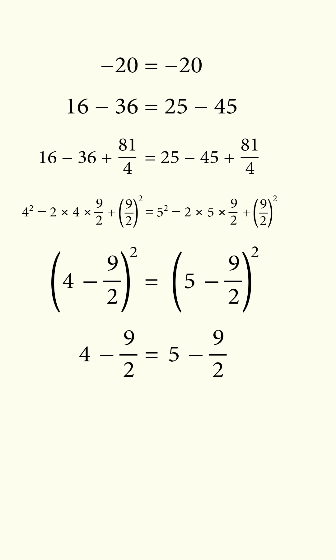This means 4 minus 9 over 2 is equal to 5 minus 9 over 2, which means 4 is equal to 5, or 2 plus 2 is equal to 5. So where's the mistake?